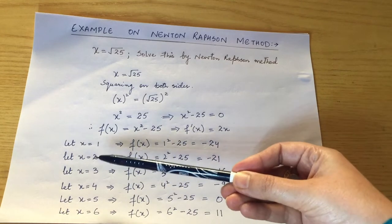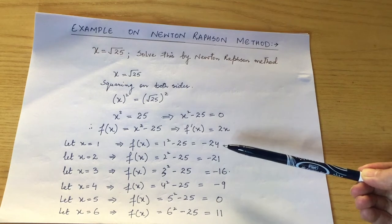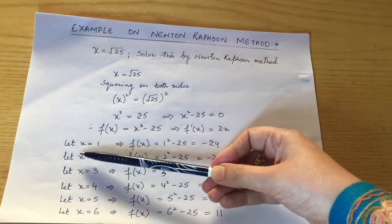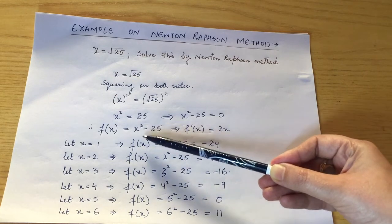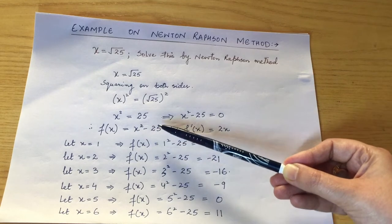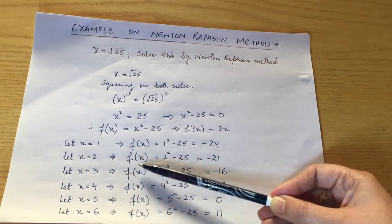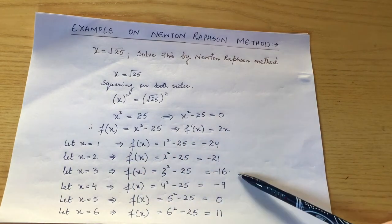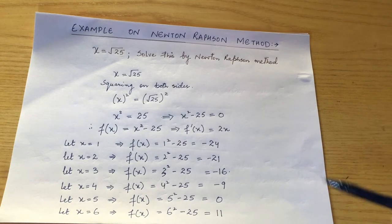Next we check where the root lies by putting values of x into f(x). At x=1: f(1) = 1 - 25 = -24; x=2: -21; x=3: -16; x=4: -9; x=5: 0; x=6: 36 - 25 = 11. We see the sign changes between x=5 and x=6.